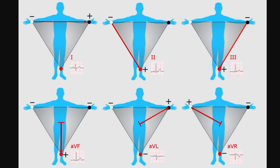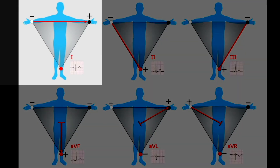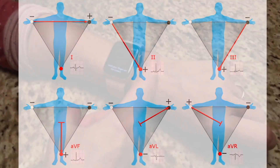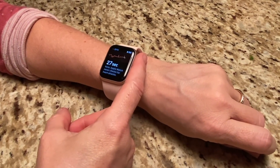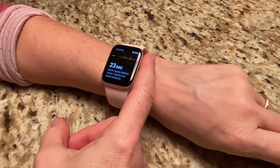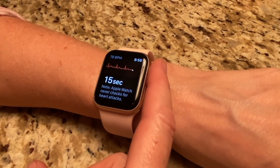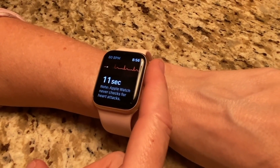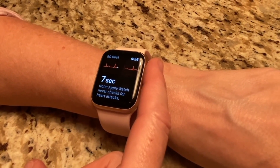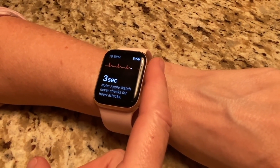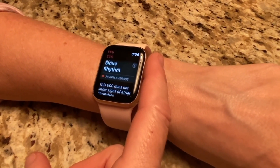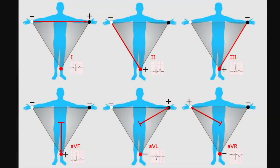Because you're putting your two hands together on a watch, you're pretty much going to be limited to lead one. When somebody is wearing the watch on the left hand, the back of the watch picks up the electrical signals from the left hand. When the person touches their right hand to the crown of the watch, it gets the electrical signal from the right hand, generating an ECG rhythm in lead one — comparing electrical conduction from the right arm to the left arm. As soon as you touch the crown with the right finger, that connects the electrical circuit and the watch generates a single-lead ECG.